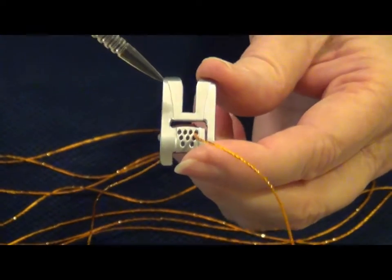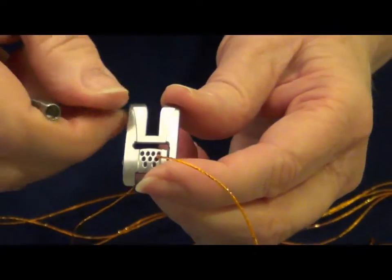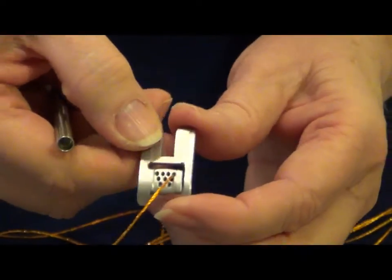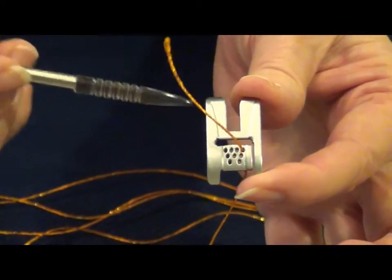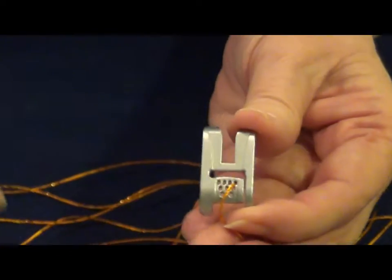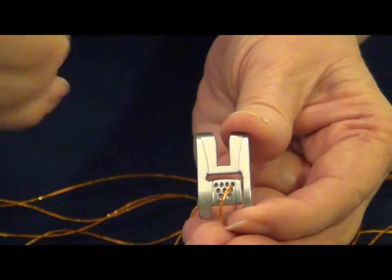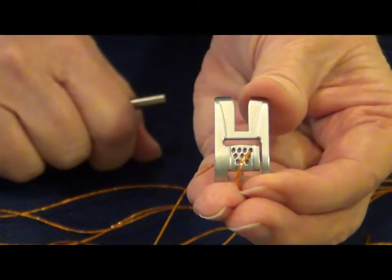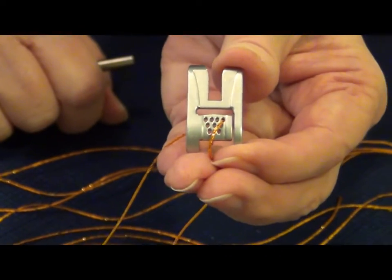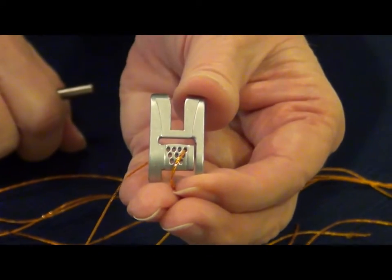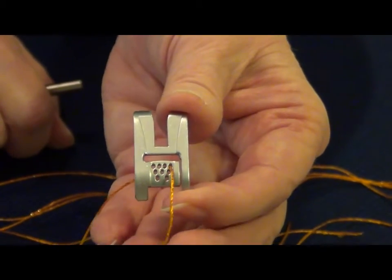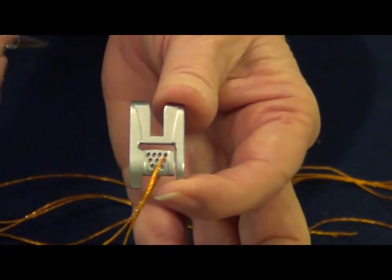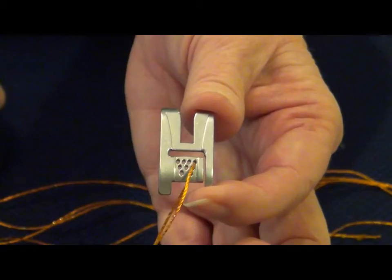Now I couldn't find this foot and I wound up a while back ordering one from eBay, and when I got it and got to looking at it, I discovered it was a knock-off foot and it didn't have this groove on the back, so the foot just simply would bog down when you tried to sew across the cord. So be sure you get an authentic foot. This one cost me about twenty dollars I think.